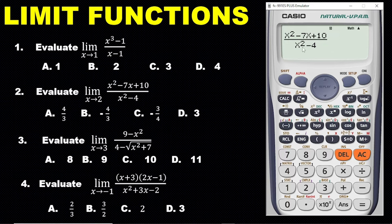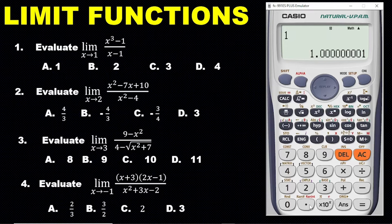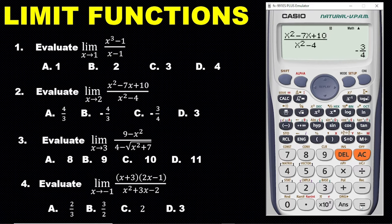After entering the expression, press CALC. We need a number close to two from the left — for example, 1.9999999. Click the equal sign and we are getting negative three over four. From the possible answers, the correct answer is option C.